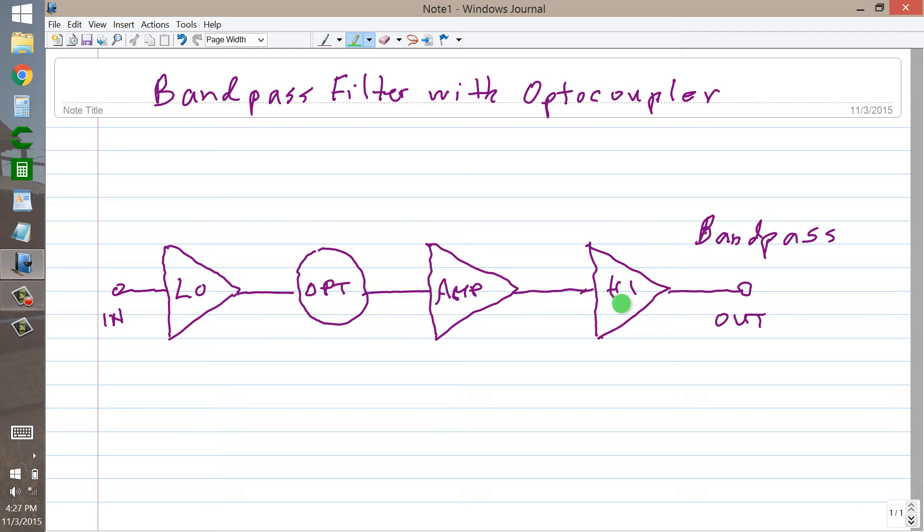The trick here is that the cutoff frequencies of the low and high pass filters need to be just so. Let's suppose these are both adjustable filters in terms of frequency. So we can adjust the cutoff for the low pass, and we can adjust the cutoff for the high pass. Let's call the cutoff frequency for the low pass filter, F1, and the cutoff frequency for the high pass filter, F2.